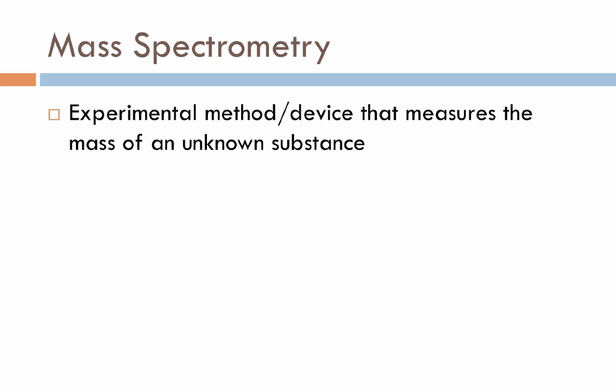Before we dive into the actual mathematics that explains how we figure that out, let's talk a little bit about the process for determining the molar mass of your unknown substance. That methodology is something known as mass spectrometry, a very important technique in the science world. It's basically an experimental method along with the device that measures the mass of an unknown substance. And it does this using some pretty straightforward physics.